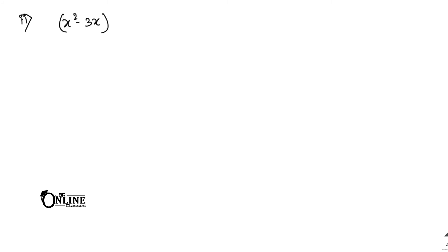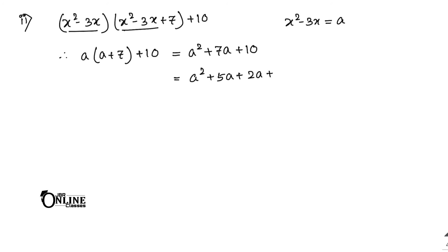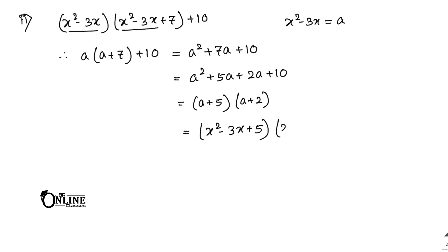Sum number 9.2: (x² minus 3x)(x² minus 3x plus 7) plus 10. Let a equal (x² minus 3x), so the expression becomes a(a plus 7) plus 10, which is a² plus 7a plus 10. Middle-term factorization: (a plus 5)(a plus 2). Substituting back: (x² minus 3x plus 5)(x² minus 3x plus 2) is the final answer.